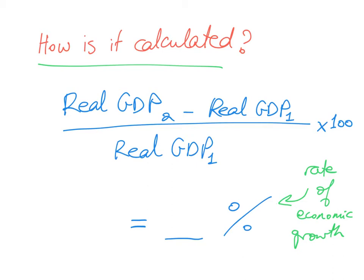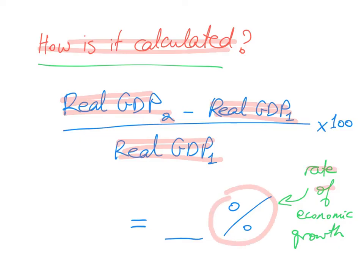How is economic growth calculated? Essentially we use real GDP or real GDP per capita. You take the new real GDP — real GDP 2 of that year, the more recent year — minus real GDP 1, the less recent or previous year, divided by real GDP 1, times 100, and the answer gives you a percentage. Remember, it's a rate of economic growth, so it is a percentage.